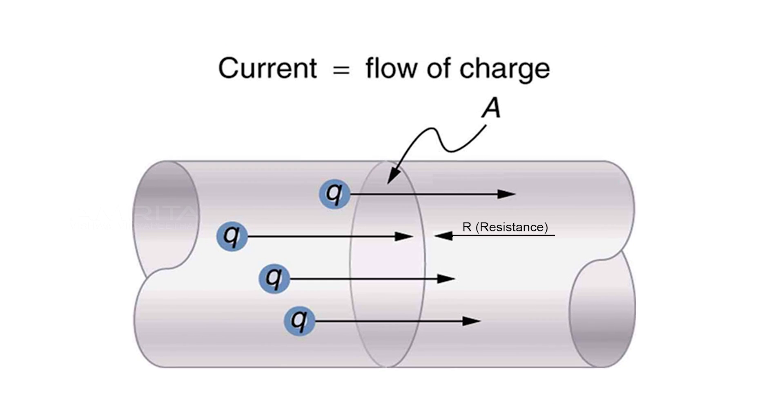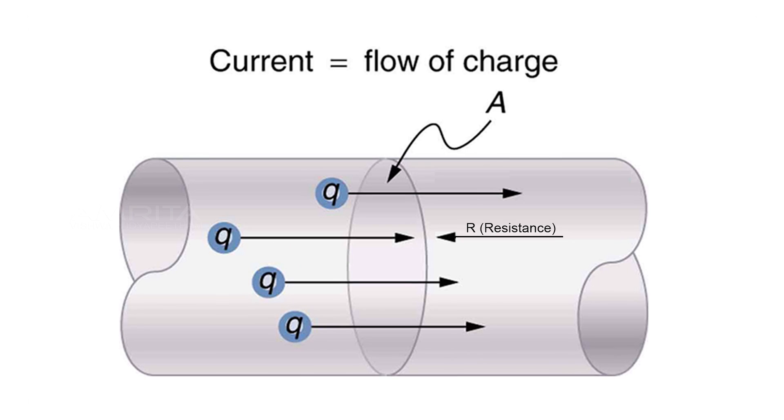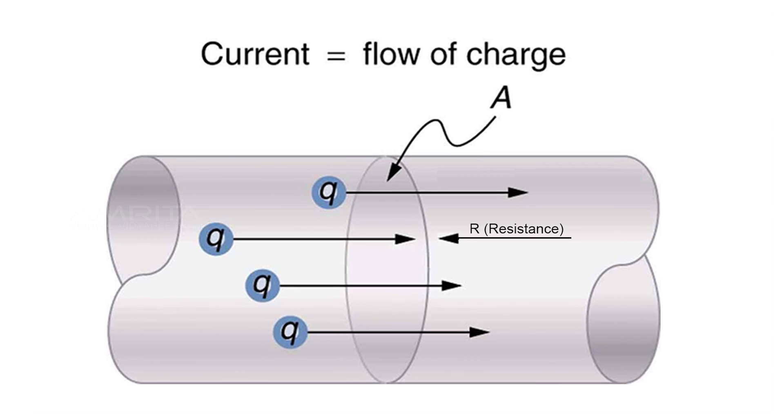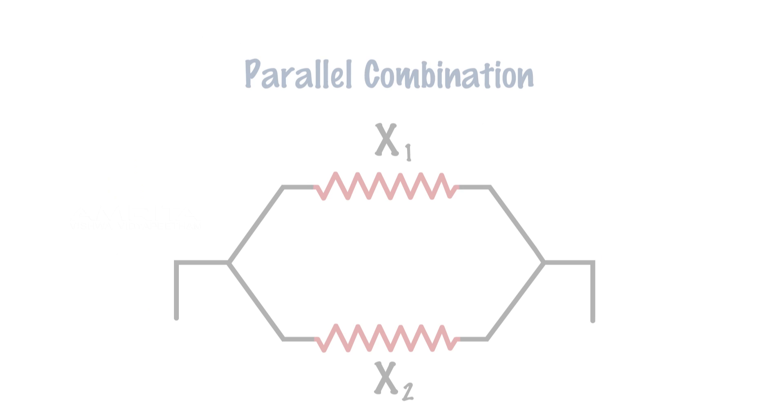The property of a conductor to oppose the flow of charges through it is called resistance. In this experiment, our aim is to determine the equivalent resistance of two resistors when connected in parallel.